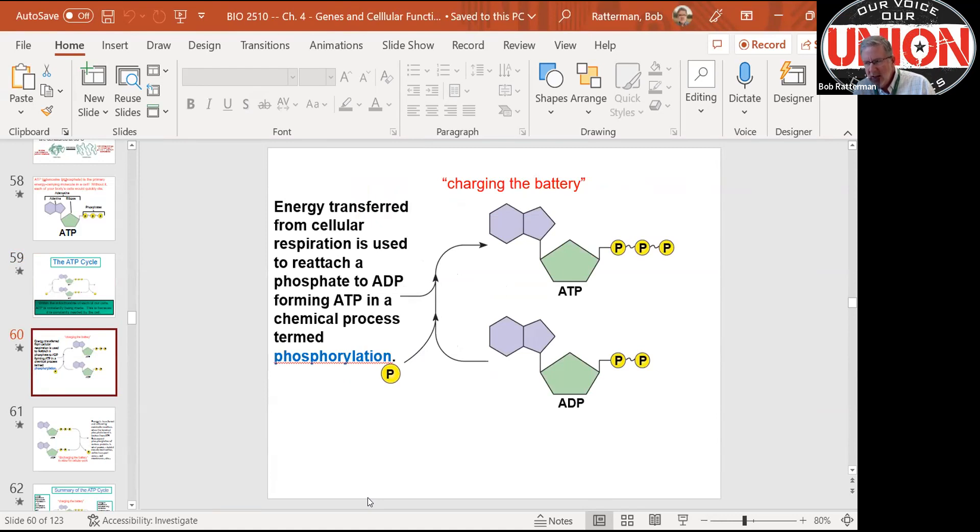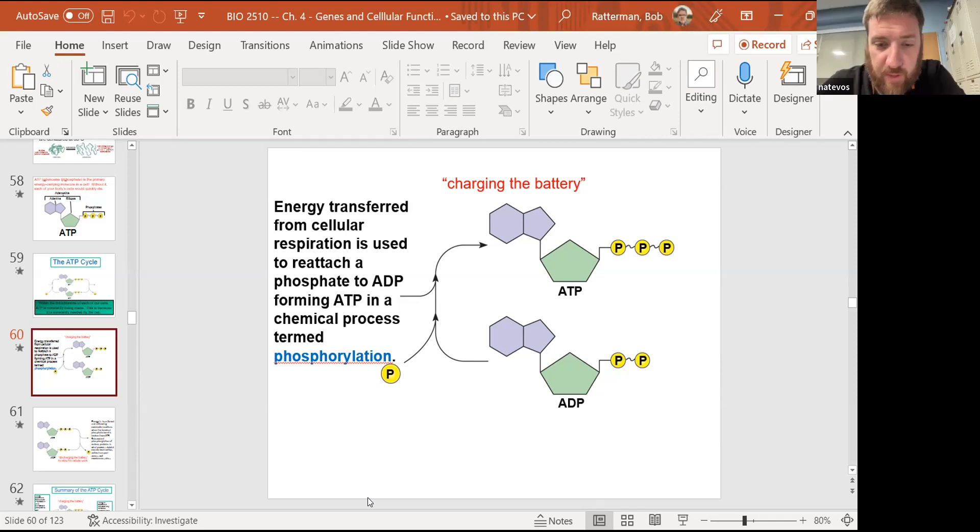It actually also takes ATP for muscle to relax. We're not going to talk about that now, but you'll be hearing more about that when we get into the muscular system. If I'm a sperm cell, what do I need energy for? Travel to the egg. For flagellar motion to find the egg and fertilize it. So these are all examples of how cells use energy. If you run out of energy, you're going to die.